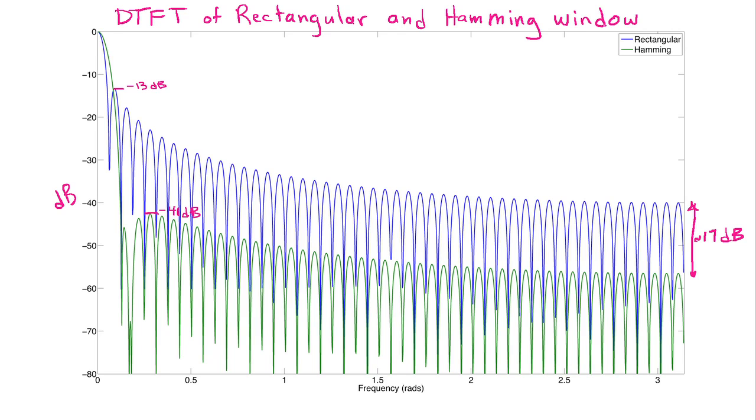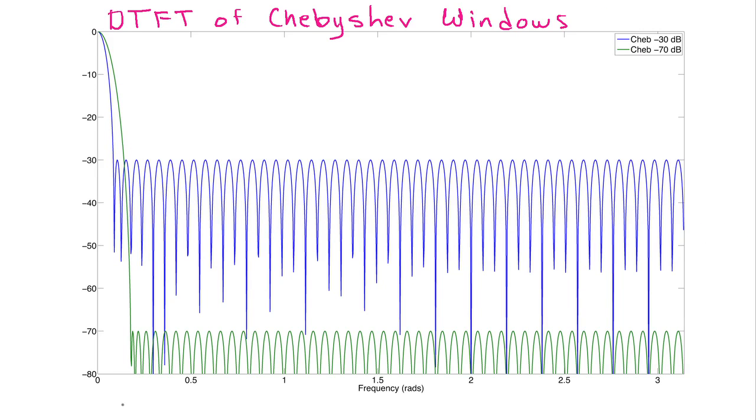Next we'll look at the two Chebyshev windows. I've shown their DTFTs in the same format here. The axis is in dB. So you can see that the blue one, which is minus 30 dB, has indeed equal side lobes at uniform at minus 30 dB across the entire frequency range.